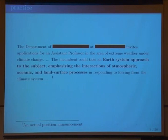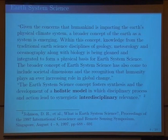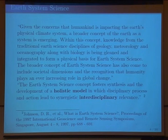Here's an actual job ad — open right now, you can apply if you like. This is a job opportunity for someone who wants to study Earth system science, which means emphasizing the interaction of atmospheric, oceanic, and land surface processes. The definition of Earth system science is a synthesis and development of a holistic model in which interdisciplinary processes lead to interdisciplinary relevance — holistic models, interdisciplinary relevance. Study everything, emphasize everything, with lots of different people.